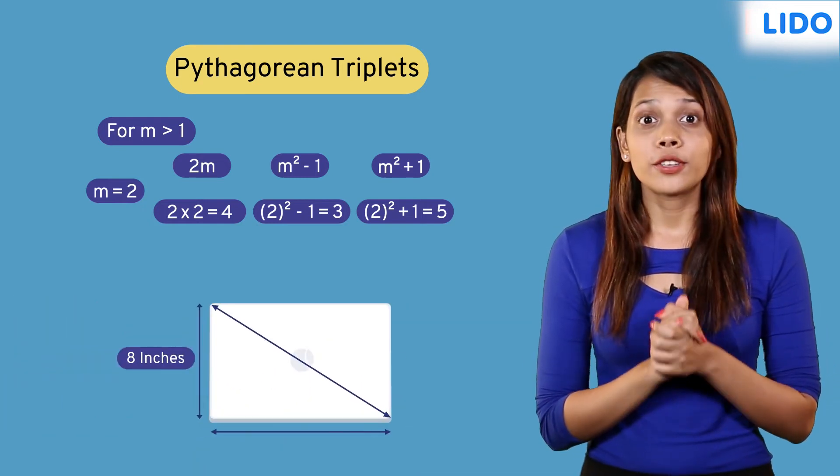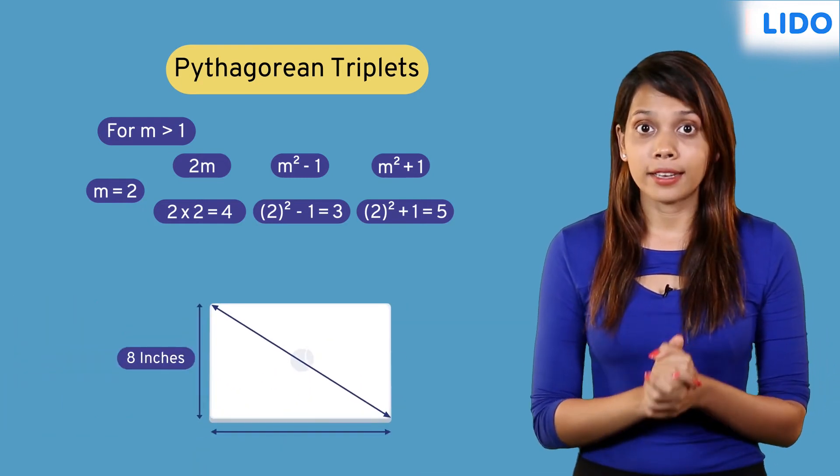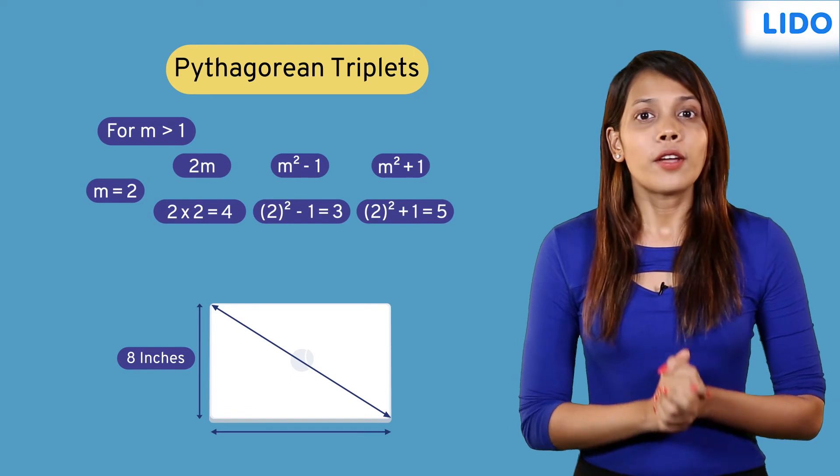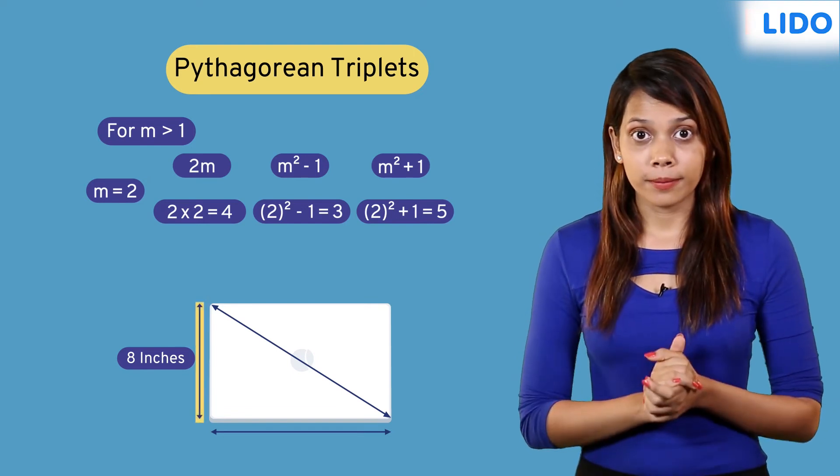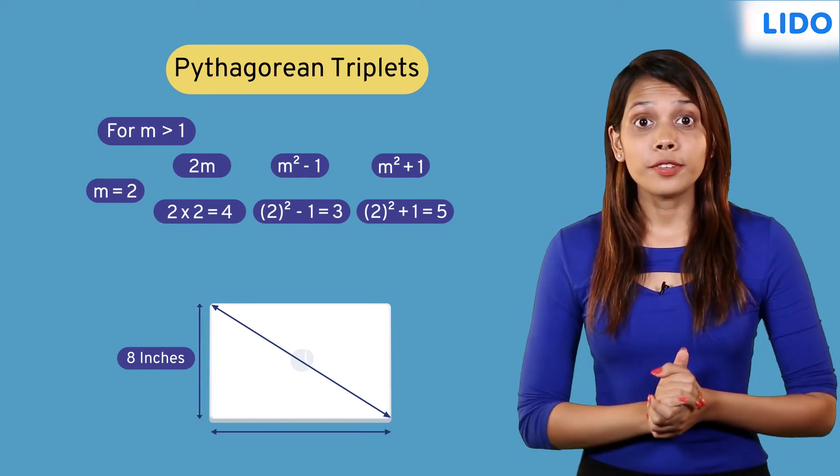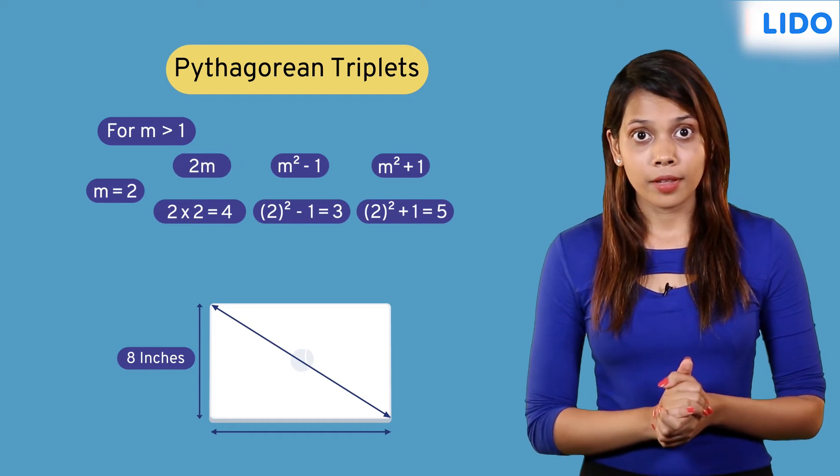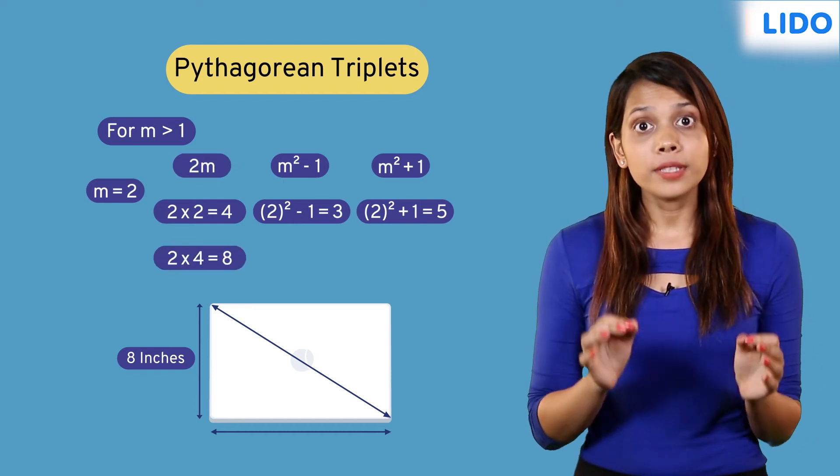Let's use this trick to now find the width and diagonal of the laptop. We know the height is 8 inches. The length of one of its sides must be 2m. So let 2m equal 8 inches.